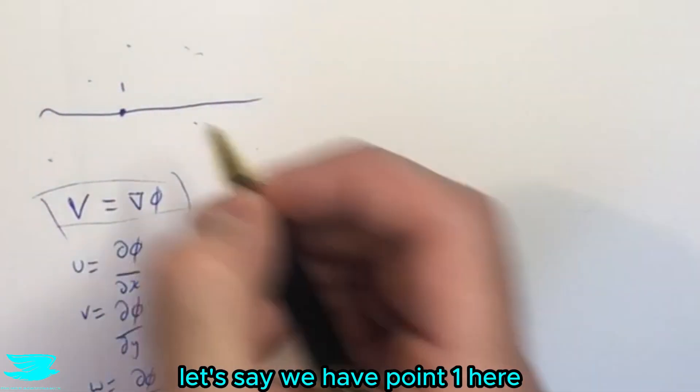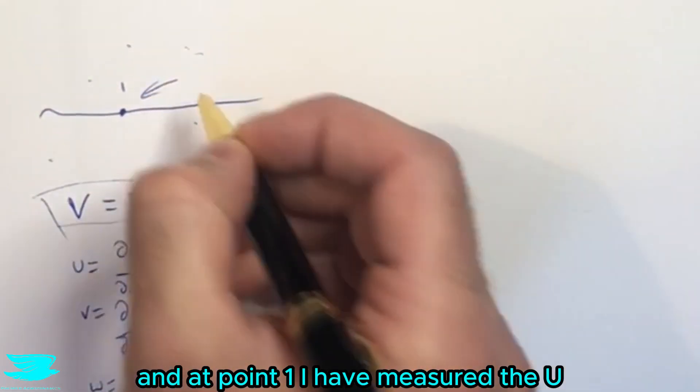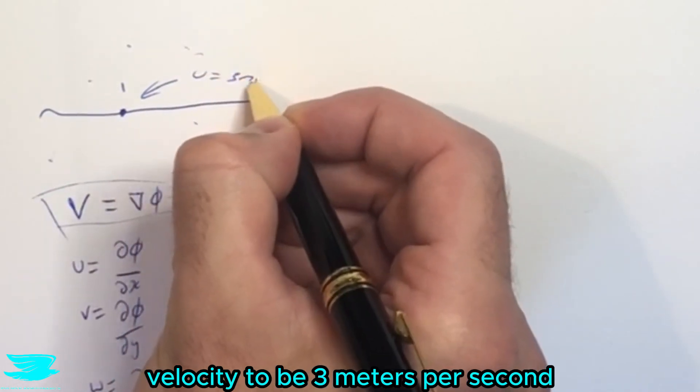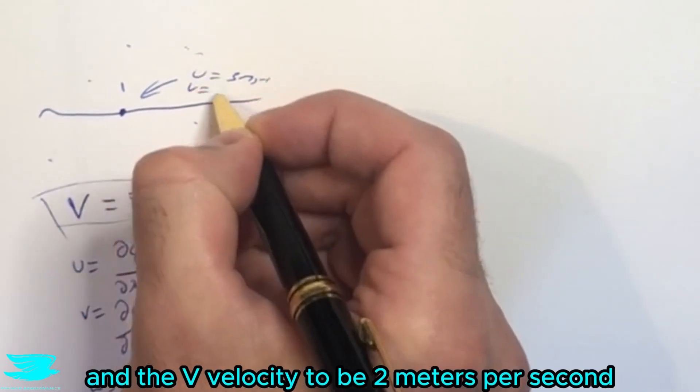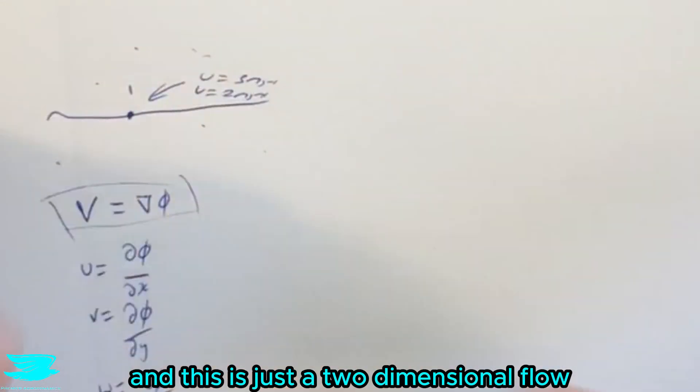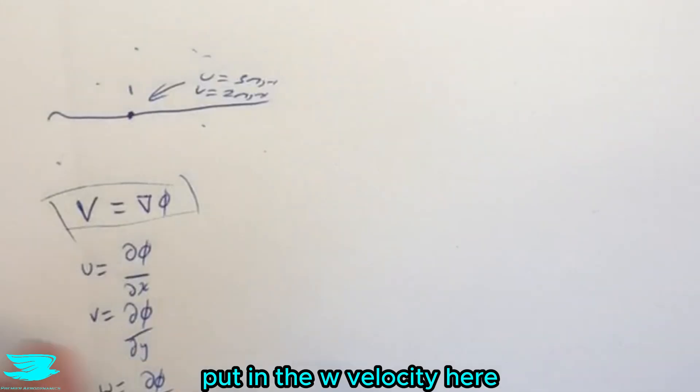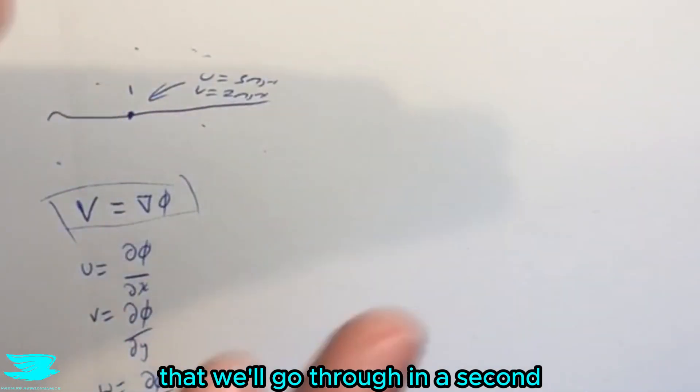So let's say we have point one here and at point one I have measured the u velocity to be three meters per second and the v velocity to be two meters per second, and this is just a two-dimensional flow. If it was three dimensions it would be very easy, you just put in the w velocity here and go through the exact same process that we'll go through in a second.